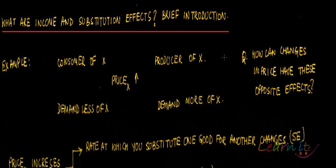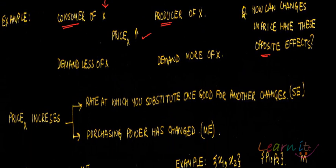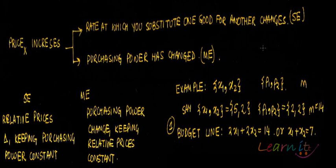What are income and substitution effects? Consider one commodity X. There are consumer effects and producer effects. Suppose price increases. As a consumer, you will demand less of X because the price has increased. But as a producer, if the price of your commodity has increased, your income would have increased and you can demand probably more of your commodity. So how can changes in prices have these opposite effects?